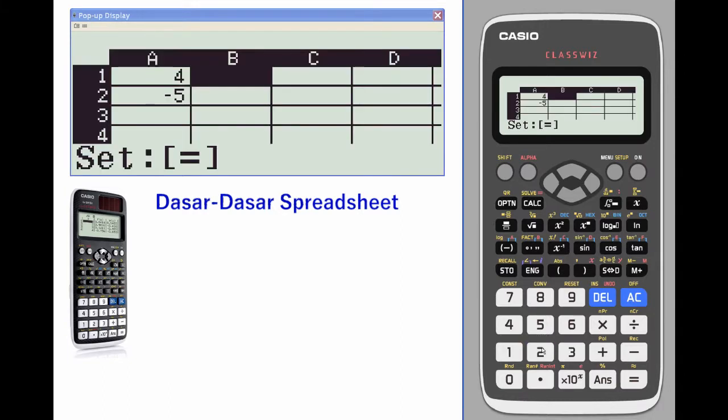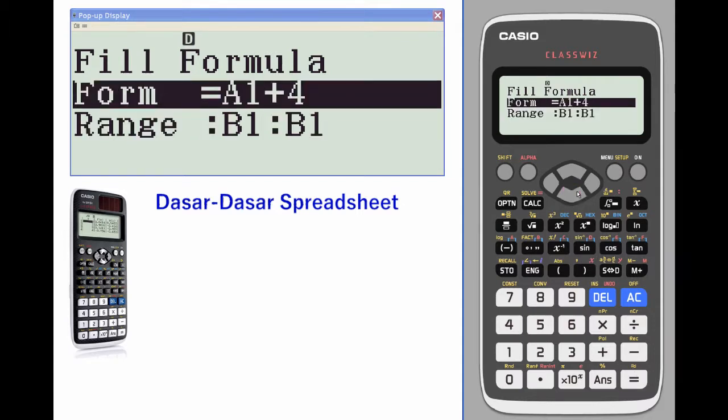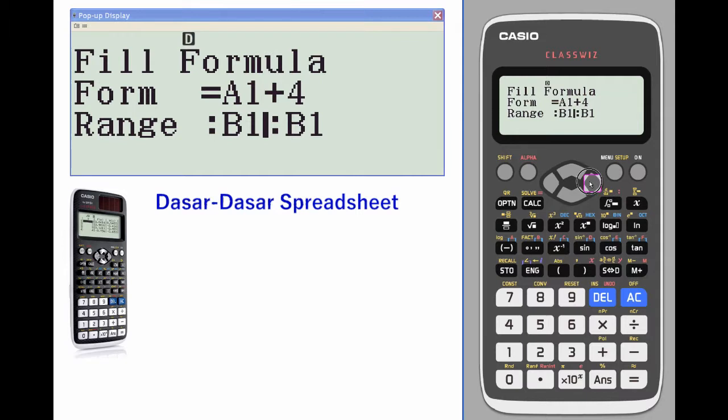I'm going to grab cell A1, then add 4 to it. I'm going to start with B1 and end with B3, so delete that and press 3.